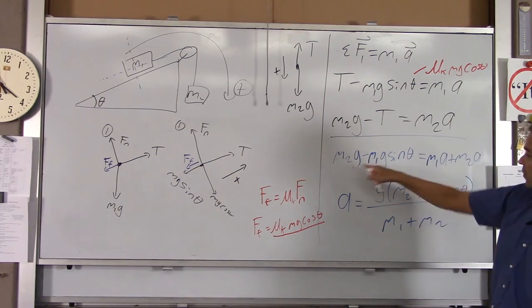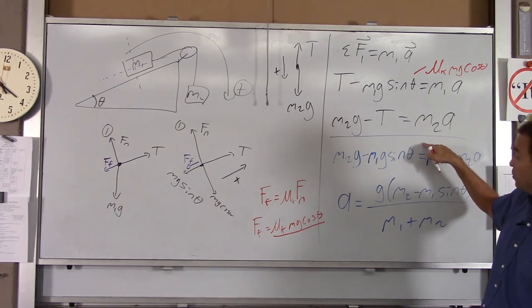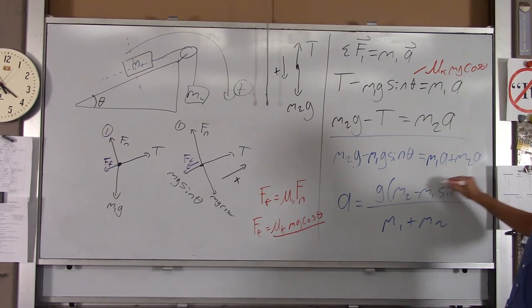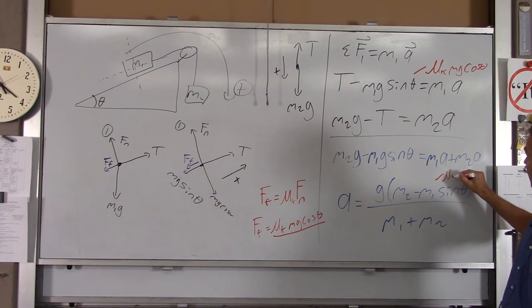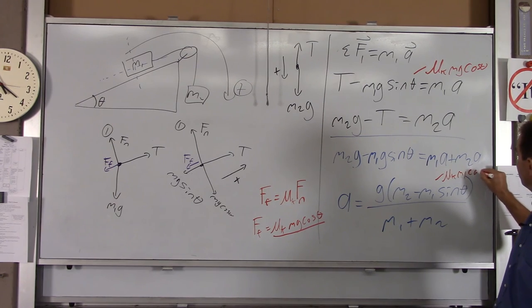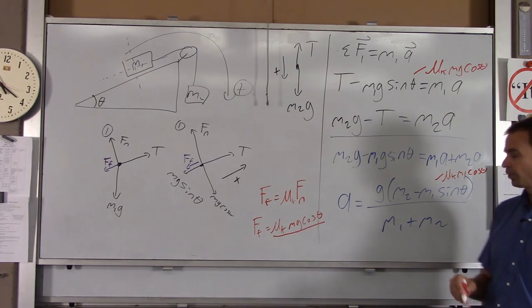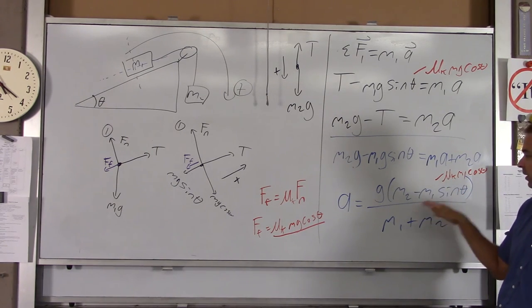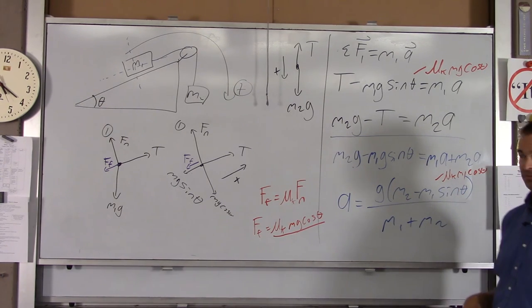This term would then go up here. You would subtract mu sub k mg cosine theta. When you did your math, in this term here, there would be a minus mu mg cosine theta. And then in here, that would show up as, in the parentheses here, it'd be a minus mu sub k m1 cosine theta. So that's how your equation would be modified. Notice that we're having another minus thing in here, another negative thing, meaning our acceleration is less than it was before.